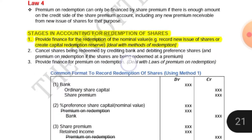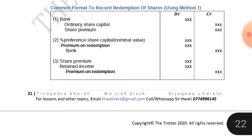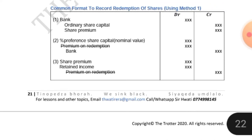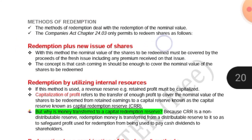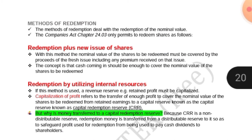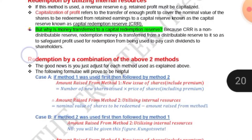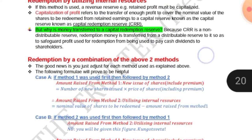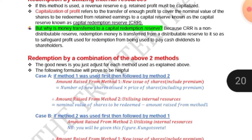We have considered this loss in our previous videos. Now we move on to the common format to record redemption of shares using method number one. Method number one is redemption plus new issue of shares. Method number two is redemption by utilizing internal resources. And method number three is redemption by a combination of the above two methods. These were explained in the previous videos.